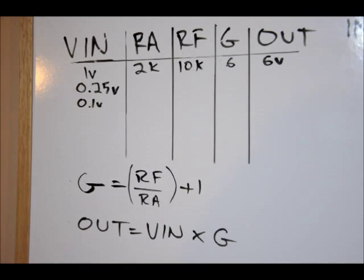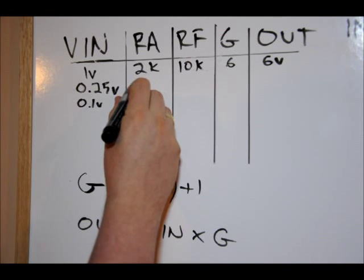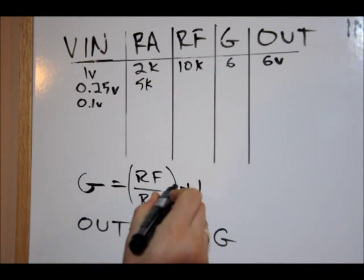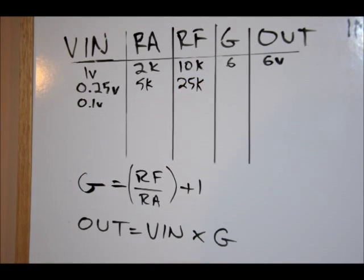So our input voltage will be 0.25 volts. Our RA will be 5k, and our RF will be 25k. Pause the video and determine gain and output voltage.